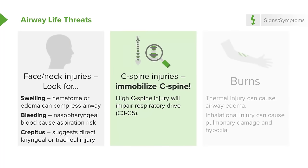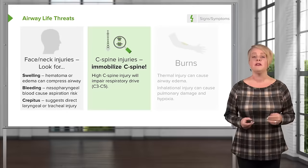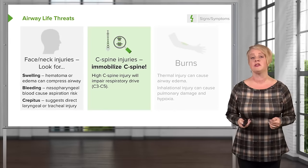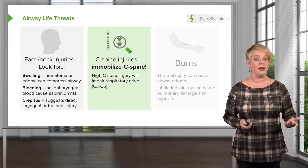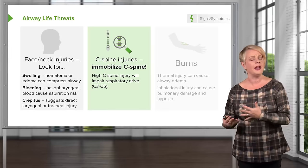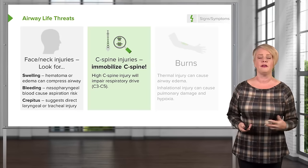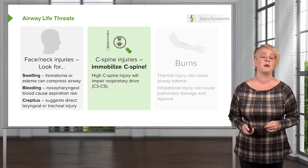While thinking about the airway, we always want to think about the cervical spine. The cervical spine should be immobilized in trauma patients in case they have an injury. Any time a patient has a high C-spine injury, they can actually lose their respiratory drive. There's a rhyme: C3-4-5 keeps the diaphragm alive. So patients with injuries in those regions of the spinal cord might have impaired respiration not because of an airway problem, but because of diaphragmatic paralysis.